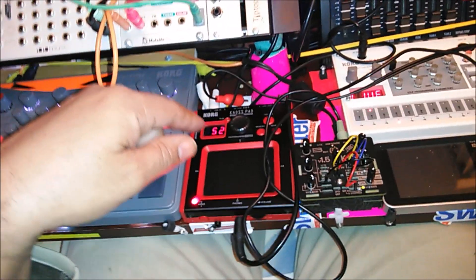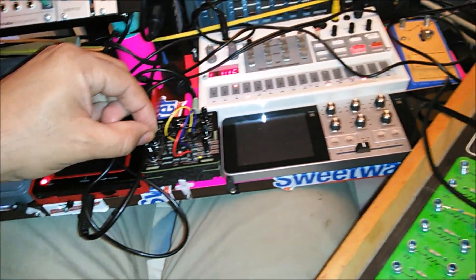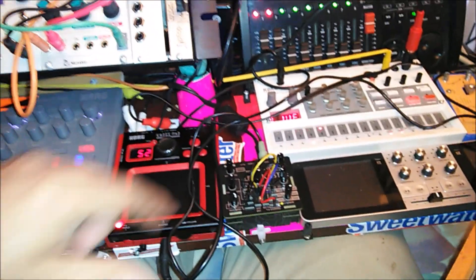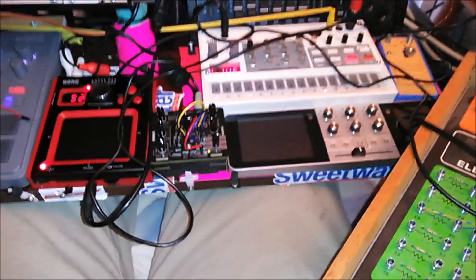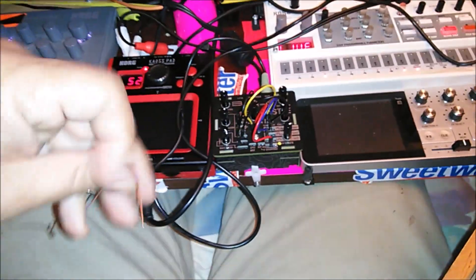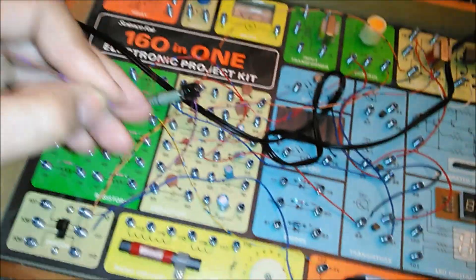And of course I have everything hooked up to the chaos pad. What I would like to do is see if I can hook up, instead of using the headphones out to control the frequency on here, I want to see if I can use individual outs like the oscillator, the LFO, the wave, and see if I can go from wire to wire.